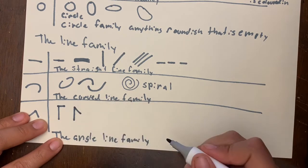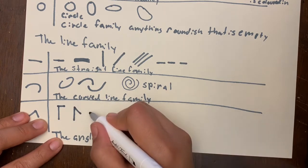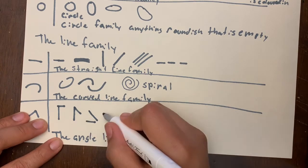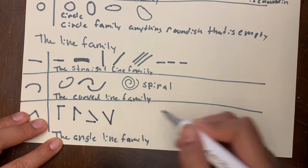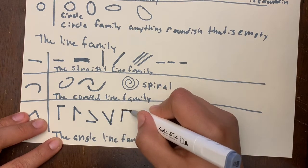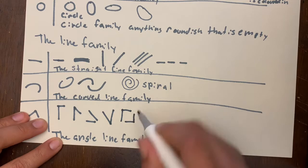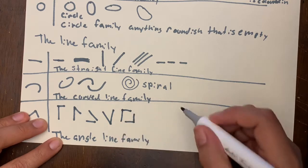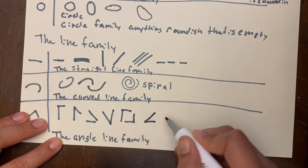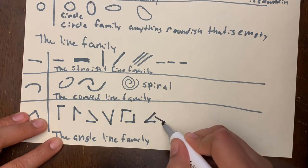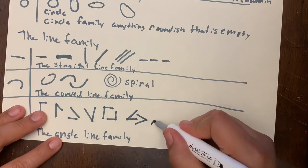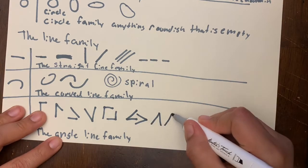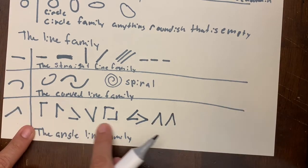The angle line family really consists of two straight lines — a vertical and horizontal, or a vertical and diagonal. That's a V-shape. Two diagonal lines that aren't touching are still angled lines. I always call the greater-than and less-than signs 'little mountains.'